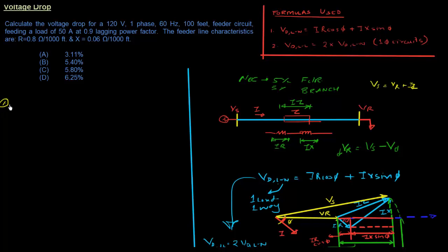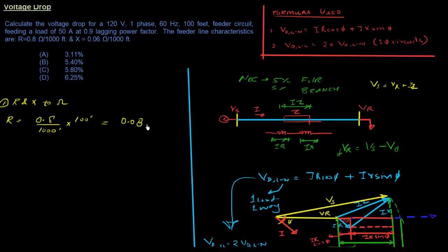Step 1: Convert R and X to ohms. We've been given 0.8 ohms per thousand feet, so R = 0.8 × (100/1000) = 0.08 ohms. Similarly for X: 0.06 ohms per thousand feet × 100 feet = 0.006 ohms.